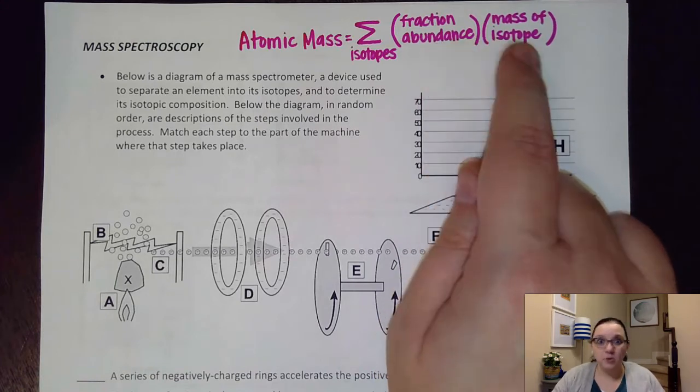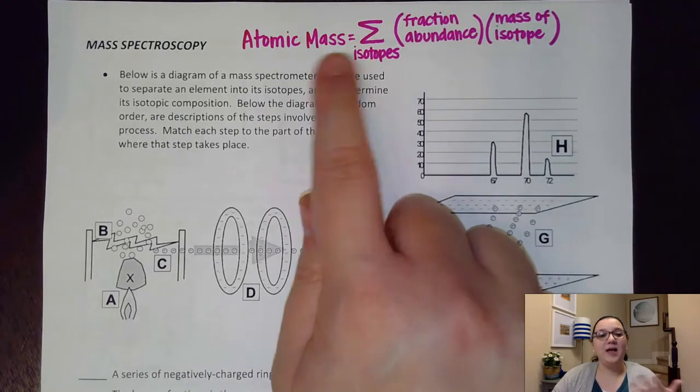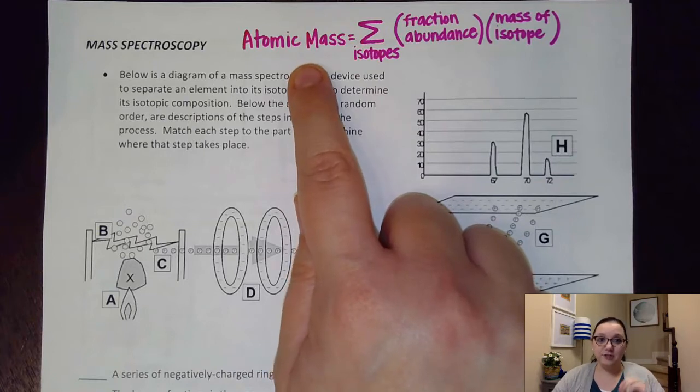We've then multiplied those values together, added them up, and that gets us that weighted average that atomic mass would be.